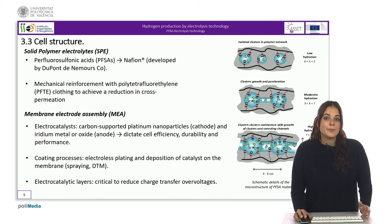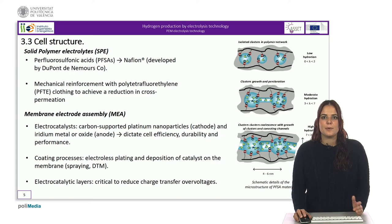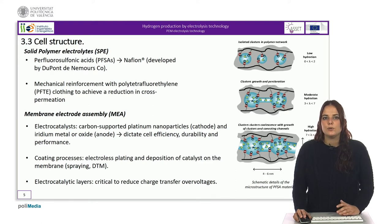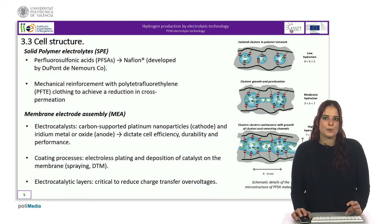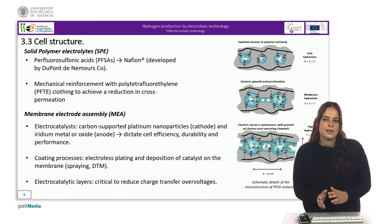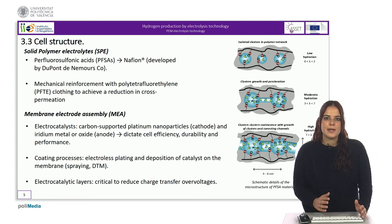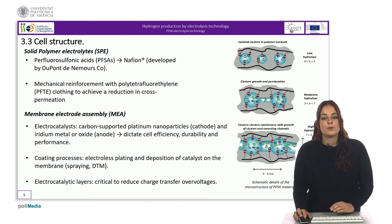As for the coating processes, there are several options available to form the electrocatalyst layers. They can be deposited directly onto the solid polymer electrolyte or onto the current distributor, which is then hot pressed against the membrane. Fabrication processes include electroplating, which is the deposition of catalysts on the membrane either by direct coating or using various techniques such as spraying or via the so-called decal transfer method. Recently, magnetron-based sputtering was successfully used to fabricate nanostructured thin-film electrodes for PIM water electrolysis.